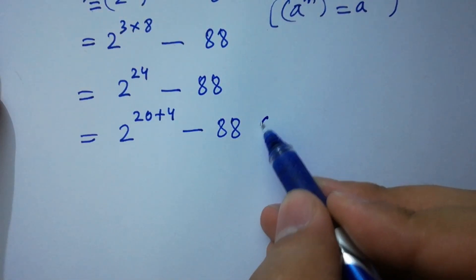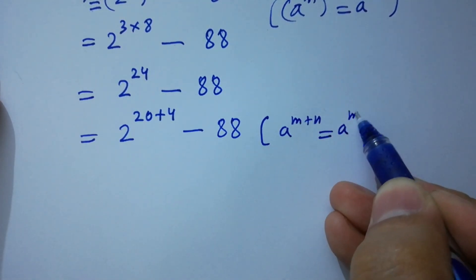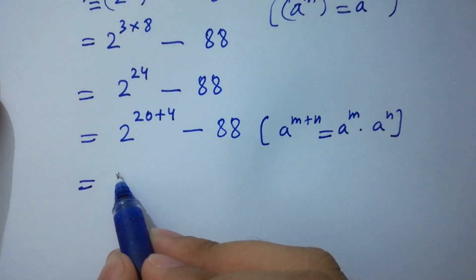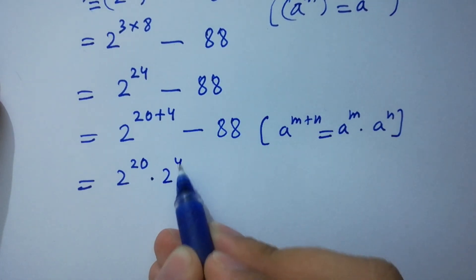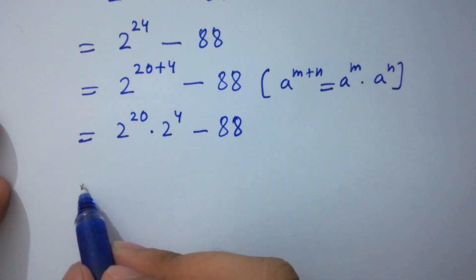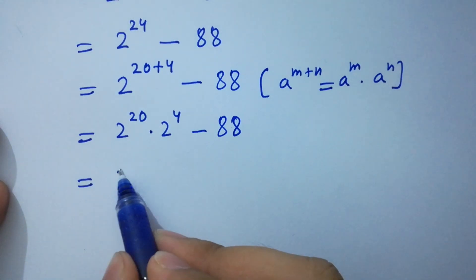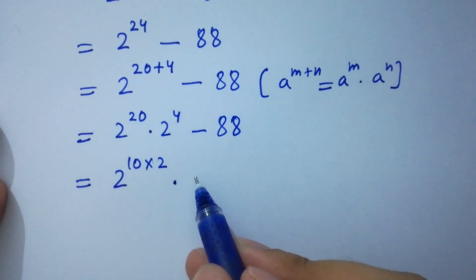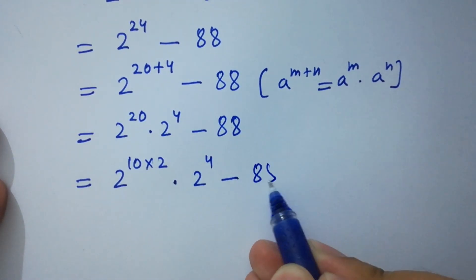Using the rule a to the power m plus n equals a to the power m times a to the power n, we can write 2 to the power 24 as 2 to the power 20 plus 4. It will be 2 to the power 20 times 2 to the power 4, minus 88. And 2 to the power 20 is the same as 2 to the power 10 times 2, times 2 to the power 4, minus 88.